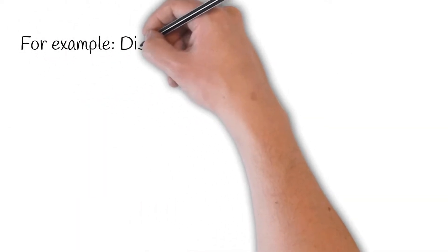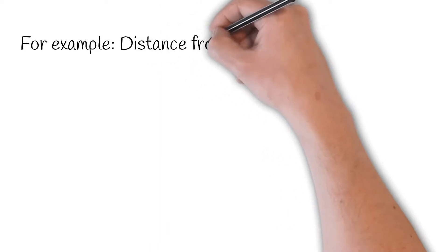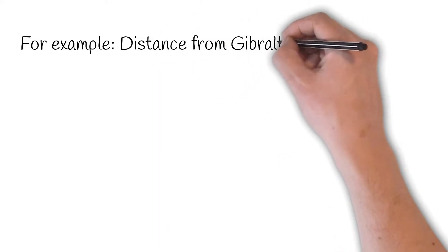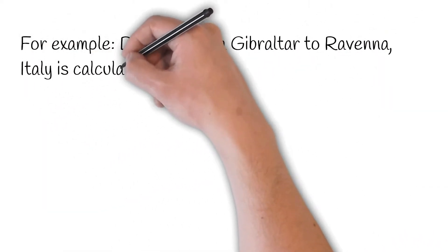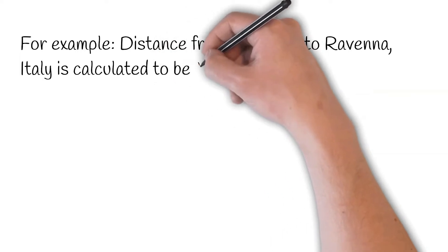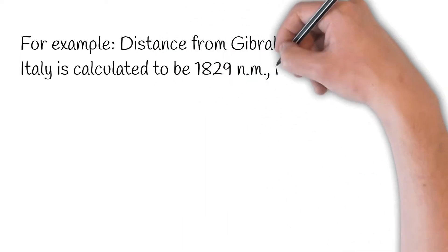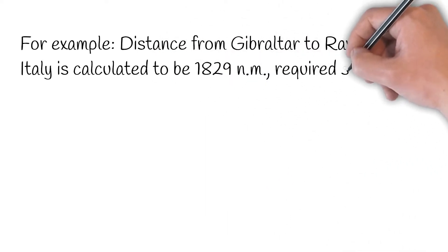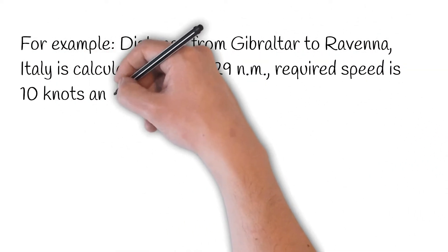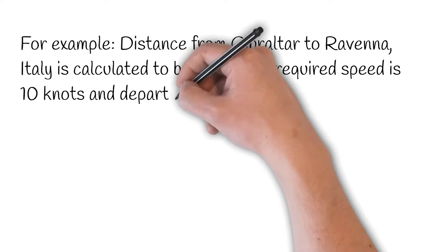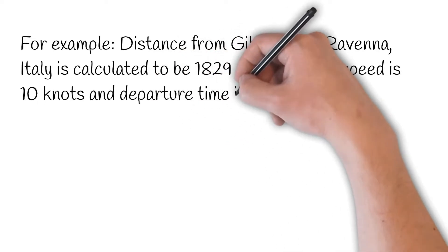For example, the distance from Gibraltar to Ravenna, Italy is calculated to be 1,829 nautical miles. The required speed is 10 knots, and the departure time is 1,100 hours, July 13, 2023.